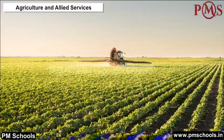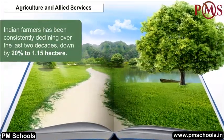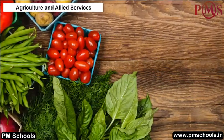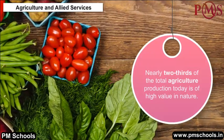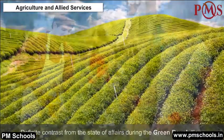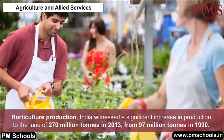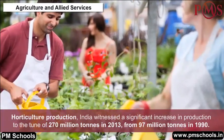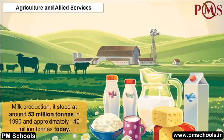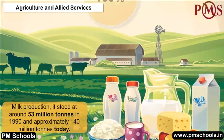Agriculture and Allied Services: The average land holding of Indian farmers has been consistently declining over the last two decades, down by 20% to 1.15 hectare. The silver lining is that nearly two-thirds of total agriculture production today is of high value, a definite contrast from the Green Revolution era. In horticulture, India witnessed a significant increase to 270 million tons in 2013, from 97 million tons in 1990. Milk production stood at around 53 million tons in 1990 and approximately 140 million tons today, witnessing a growth of more than 150%.